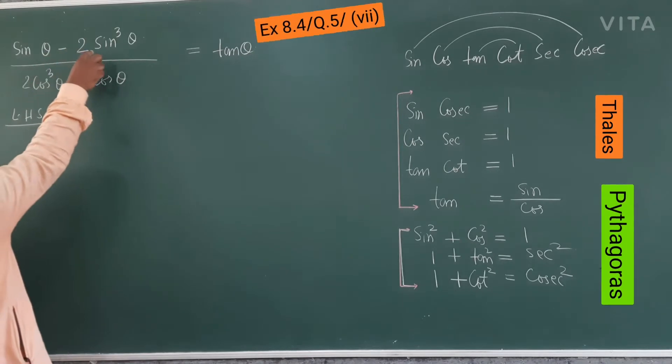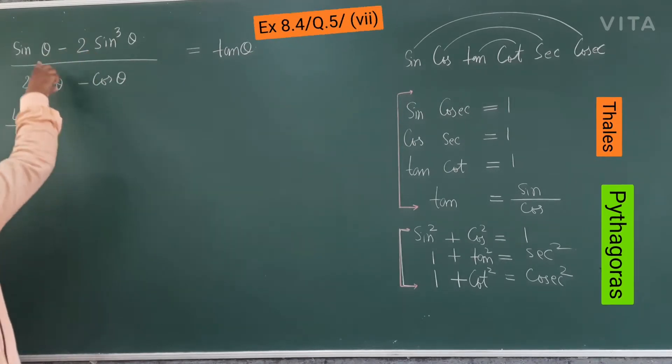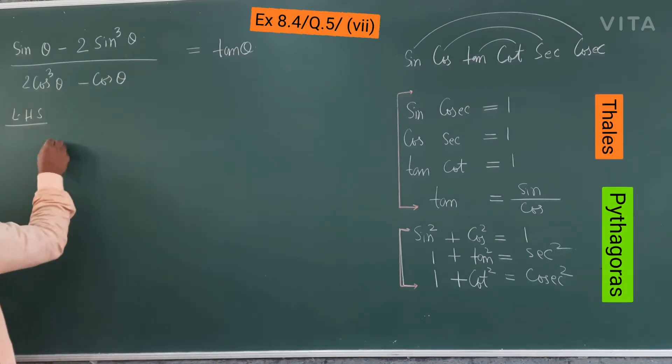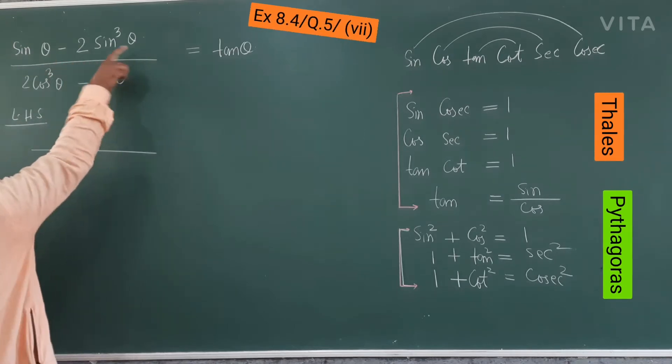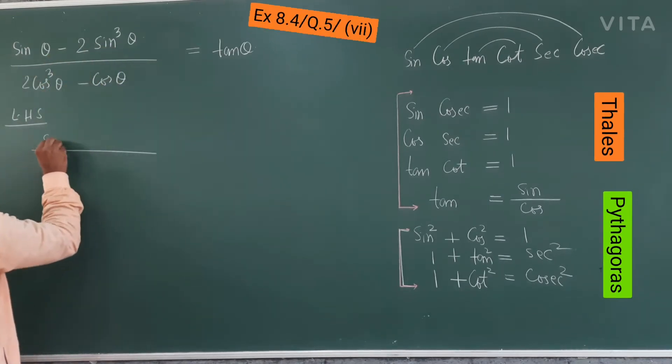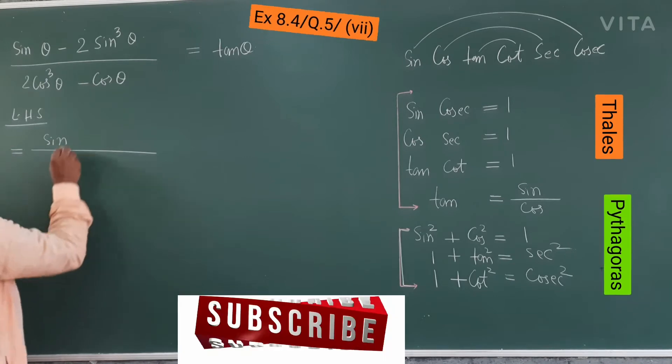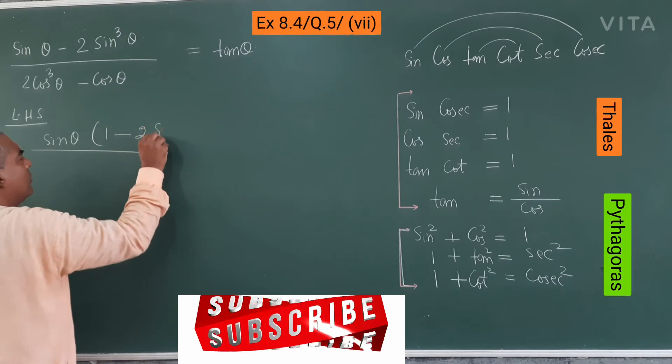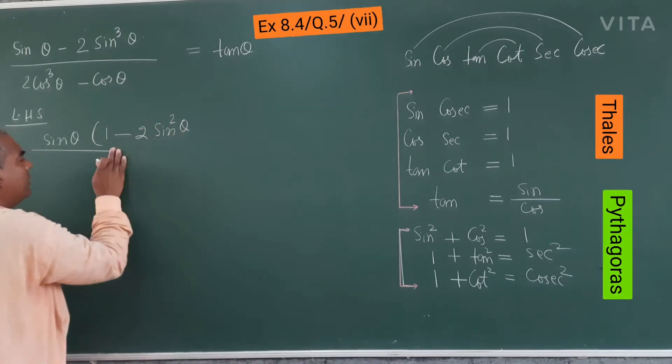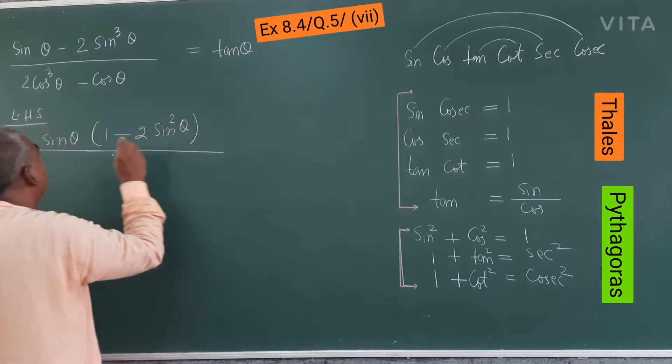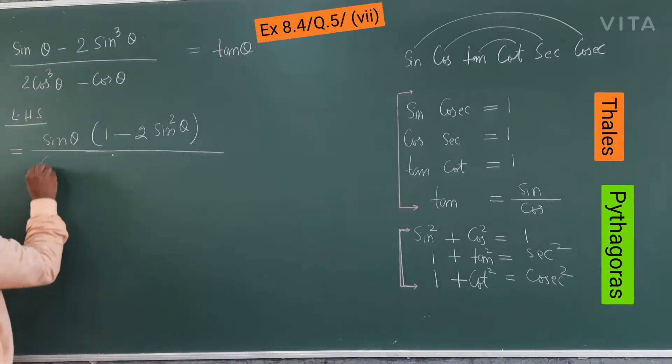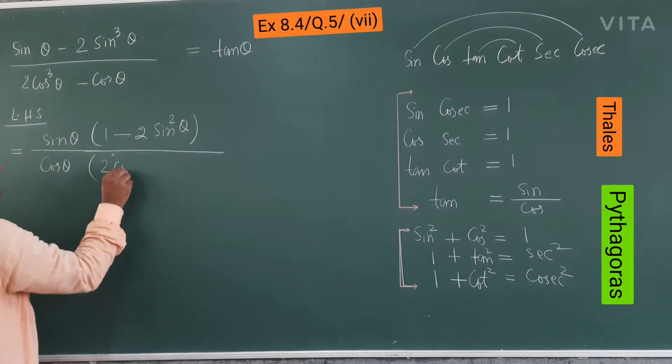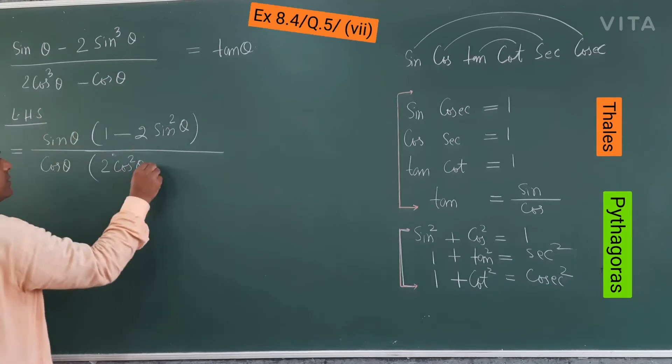So LHS, we will solve. And the rules of algebra is, take the common. It is not here, but algebra already applied. So just write, this one. Sin theta is a common. Equal is very important. Sin theta is a common. Then 1 minus 2 sin square theta. This one. Whole divided by here, cos theta common. Then 2 cos square theta minus 1.